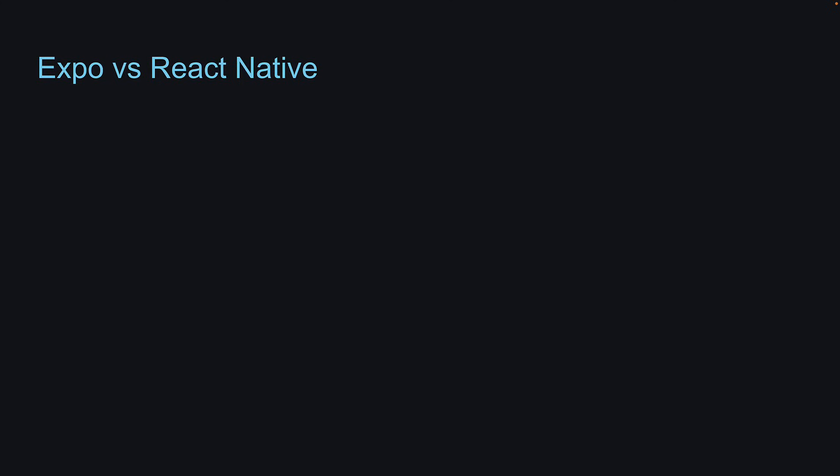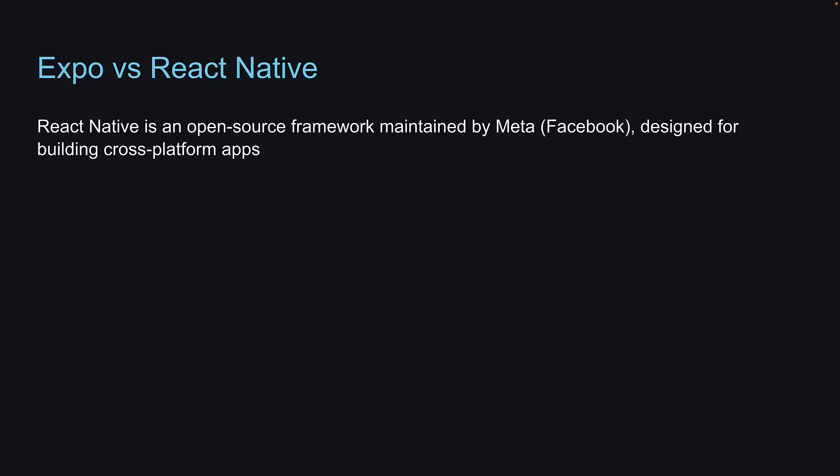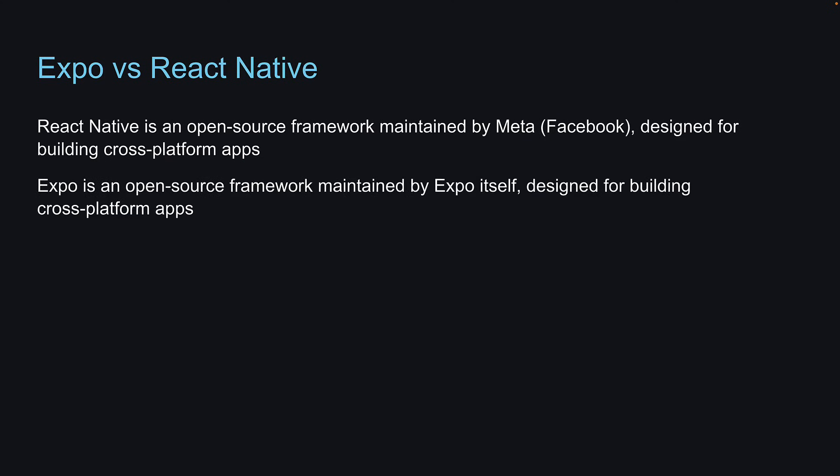We already know what React Native is. React Native is an open-source framework maintained by Meta, or Facebook, designed for building cross-platform apps. Expo, on the other hand, is an independent open-source framework maintained by Expo itself. While they share this common goal, their approaches and additional features set them apart.